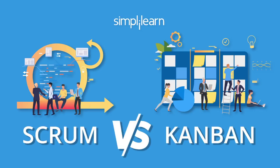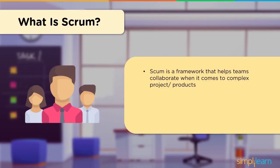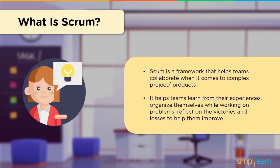Before we dive into the differences between Scrum and Kanban, let's have a look at what exactly Scrum is. Scrum is a simple agile project management framework used by organizations to help teams collaborate, handle unpredictability, and complex projects or products, while ensuring the products delivered are of the highest value. It describes a set of meetings, tools, and roles that enable teams to work in sync and help them structure themselves and manage their work. Scrum is easy to understand but very difficult to master, and although it's generally used by software development teams, its principles and themes are pretty universal and can be used with just about all kinds of teamwork.